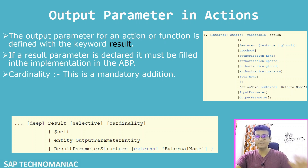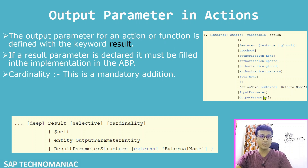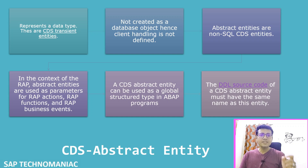Instead of passing the entire data, the cardinality is mandatory — you have to define the cardinality of your result. Without cardinality, you will get an error. So this is all about the output parameter when declaring the output parameter for a particular action.